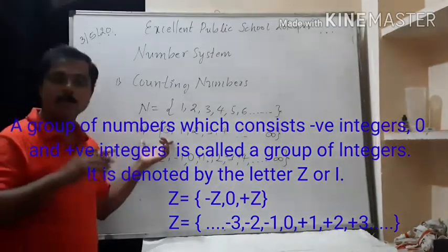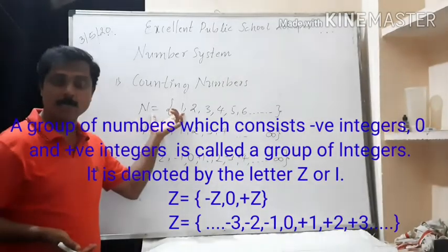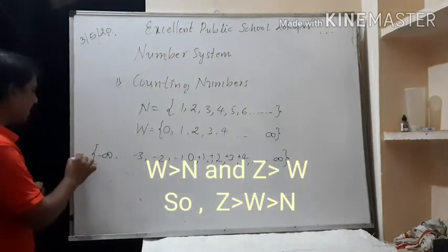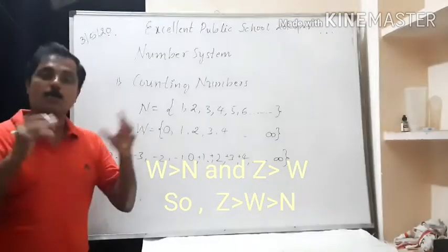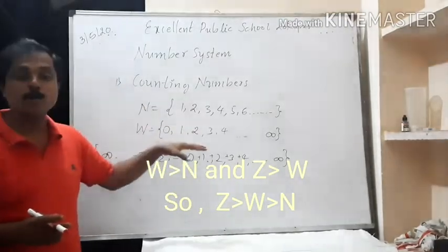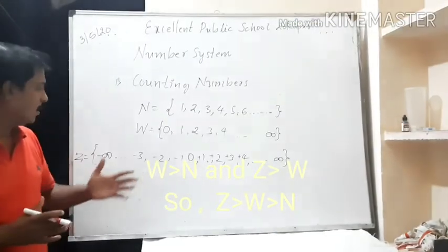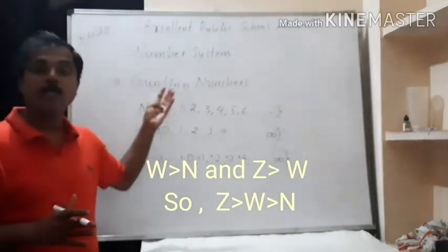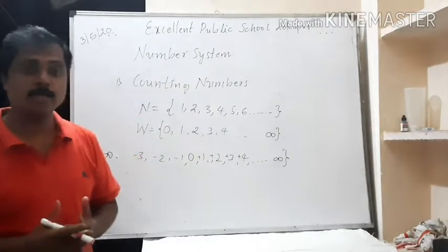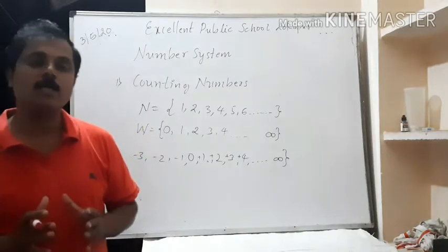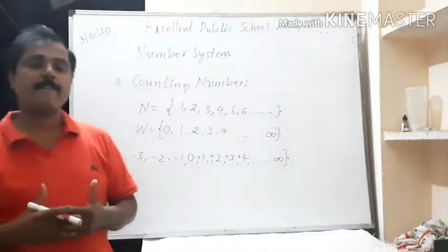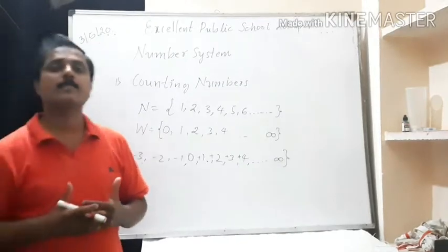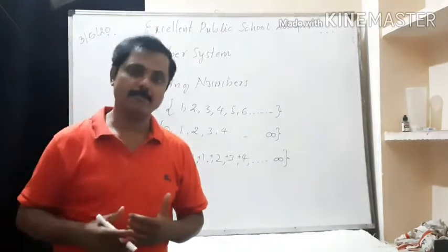So here we have seen three groups of numbers: the natural numbers, whole numbers, and integers respectively. The whole number group is greater than the natural number group, and the set of integers, denoted by Z, is greater than both. I hope you have understood the three groups of numbers. In our next lesson, we will see rational numbers. Till then, see you tomorrow. Goodbye. Thank you.